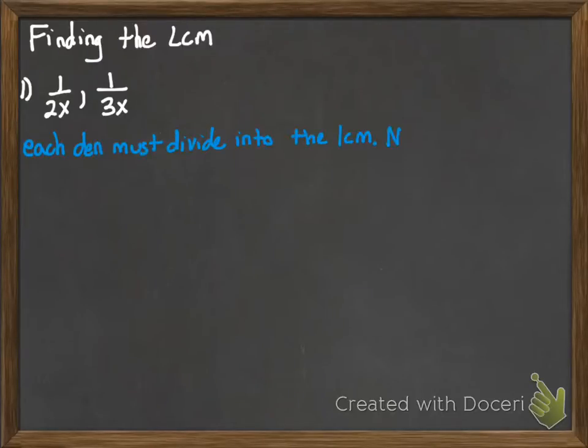First, here's what we need to have with our LCM. Each denominator must divide into the LCM, and nothing smaller should work. Now when you were dealing with numerical fractions and finding common denominators, it actually didn't matter too much if you didn't find the least common denominator.